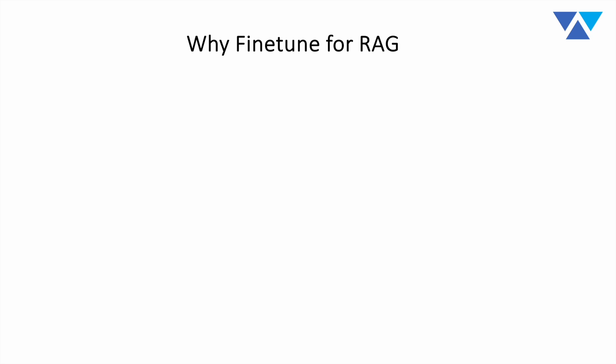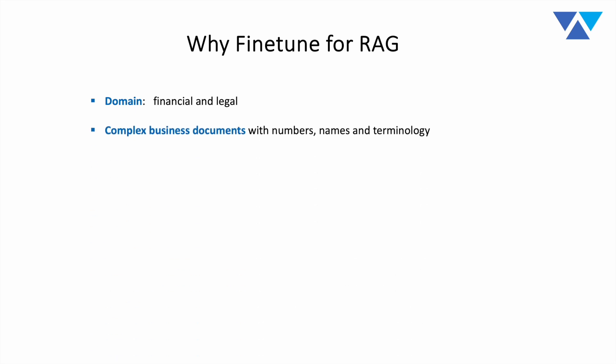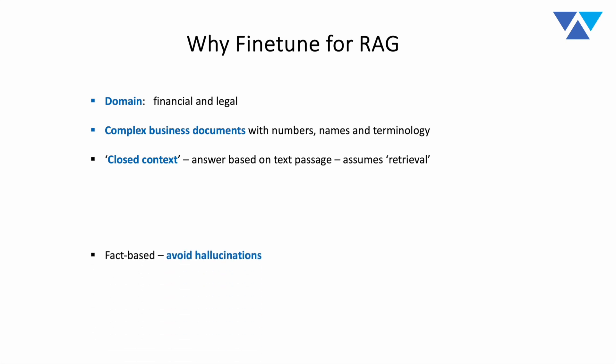One question we've received is: what does it actually mean to fine-tune for RAG, and do you need to? First, we focus on complex business documents. When you think about most enterprise RAG use cases, they'll be in financial or legal domains — complex business documents with lots of numbers, names, and specific domain terminology. It's closed context, meaning in RAG you go through a retrieval step to identify and aggregate fact-based information from a private contextual knowledge base, package it with a question, and ask it to the model. We built a fine-tuning dataset grounded entirely in closed context question answering to avoid hallucinations.